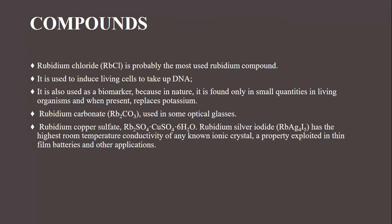Other common rubidium compounds include the corrosive rubidium hydroxide, which is the starting material for rubidium-based chemical processes; rubidium carbonate, used in some optical glasses; and rubidium copper sulfate. Rubidium silver iodide has the highest room-temperature conductivity of any known ionic crystal.